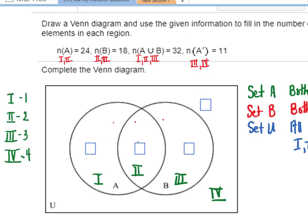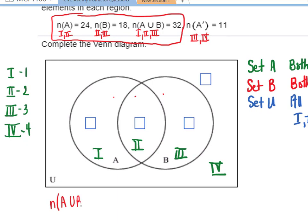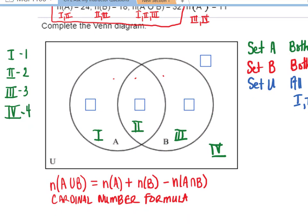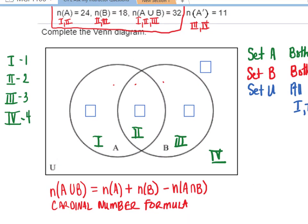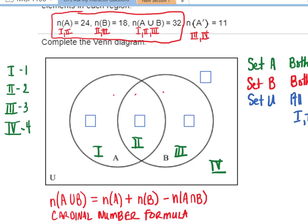What we can do is we can use the information we are given right here to find A intersect B. There is something called the cardinal number formula. The number of elements in A union B, we would find by taking the number of elements in A plus the number of elements in B, but that would count region 2 twice. So we have to subtract off the intersection. This is often useful if you have three of these facts but not the fourth. In this case, we have the union, we have A, we have B, but we don't have the intersection and we would really like to have that so that we can identify how many are in a single region and then use that to get the other regions.